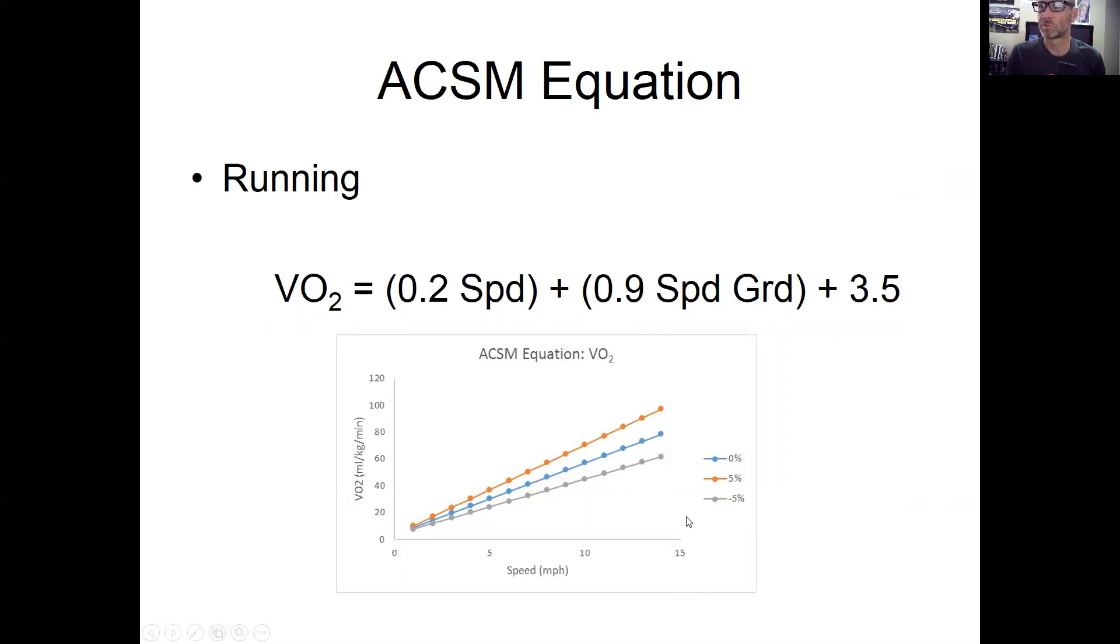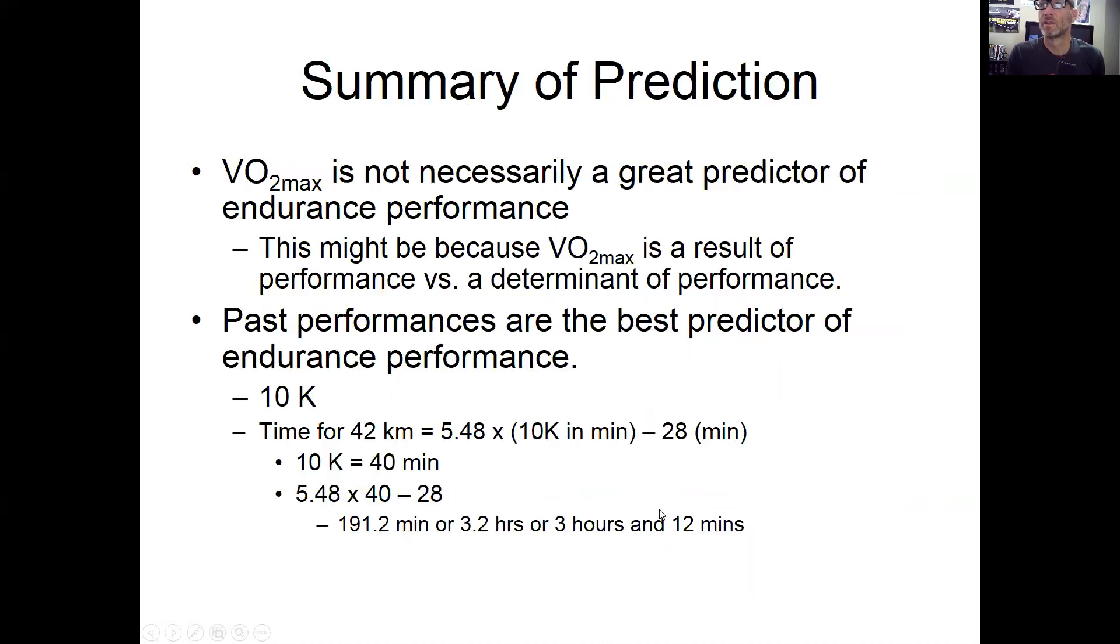Alright, summary of prediction. VO2 max by itself is not a great predictor of endurance performance. This might be because VO2 max is a result of performance versus a determinant of performance - that is, maybe VO2 max is simply because I can run a certain speed, that's going to be my VO2 max. If you look at the ACSM equation, that's what it tells you. That ACSM equation does not tell you that you reached the end of your graded exercise test, but if you put in the last speed that you achieved, it will predict VO2 max. In reality, past performances are the best predictor of endurance performance. So that nomogram is pretty interesting, and even using just a 10K time - if you use that, that's probably a better predictor of endurance performance for marathon than even some of the tables that are built out.